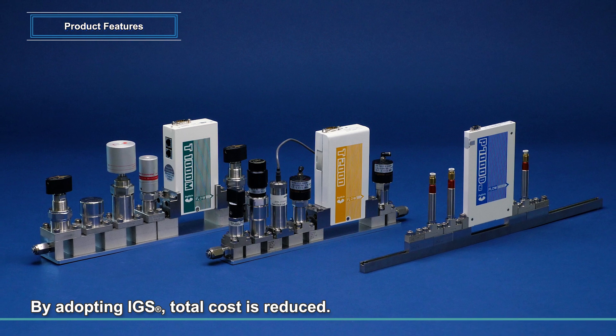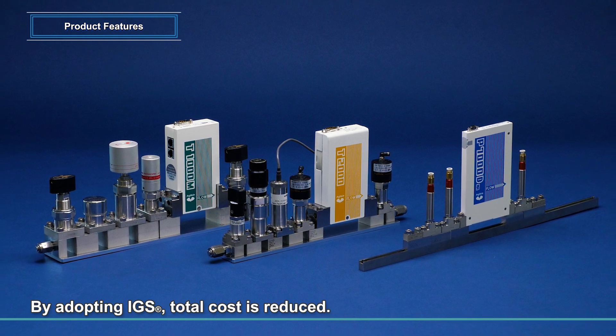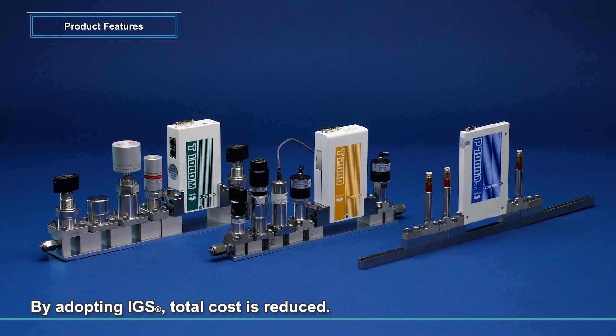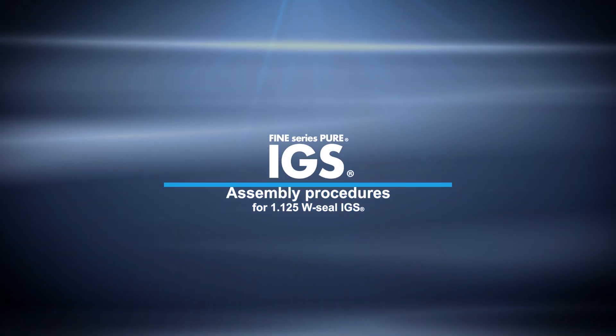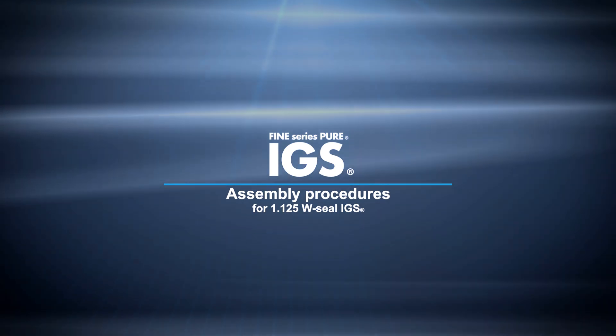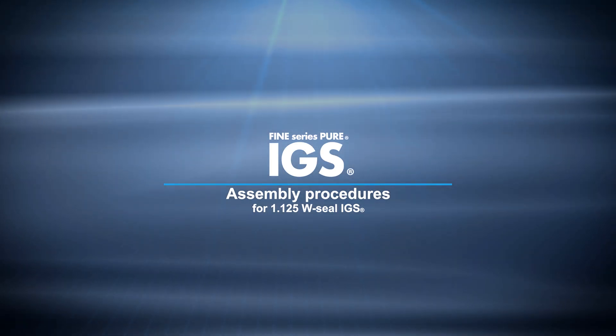Adopting FUJIKIN IGS shortens the lead time for each process, leading to a total cost reduction. Assembly procedures for 1.125 W-SEAL IGS.